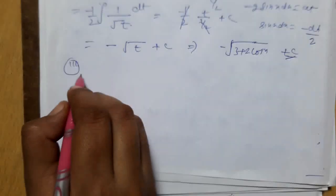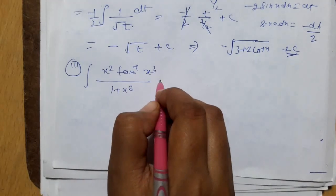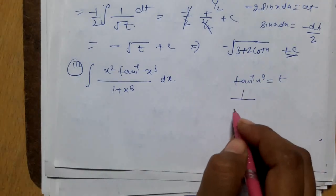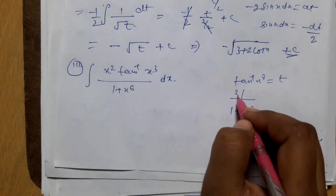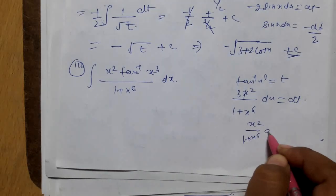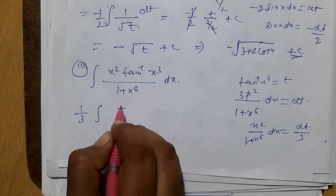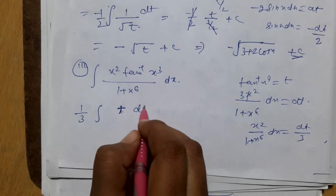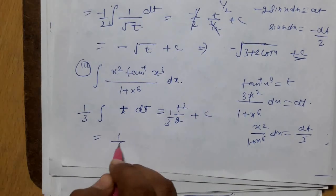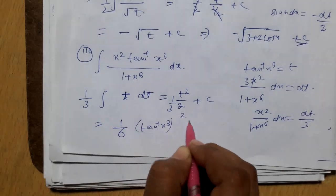Part 3: integration of x² · tan⁻¹(x³) / (1 + x⁶) dx. Put tan⁻¹(x³) = t, so 3x²/(1 + x⁶) dx = dt, meaning x²/(1 + x⁶) dx = dt/3. The integral becomes (1/3)∫t dt = t²/6 + c. The answer is (tan⁻¹(x³))² / 6 + c.